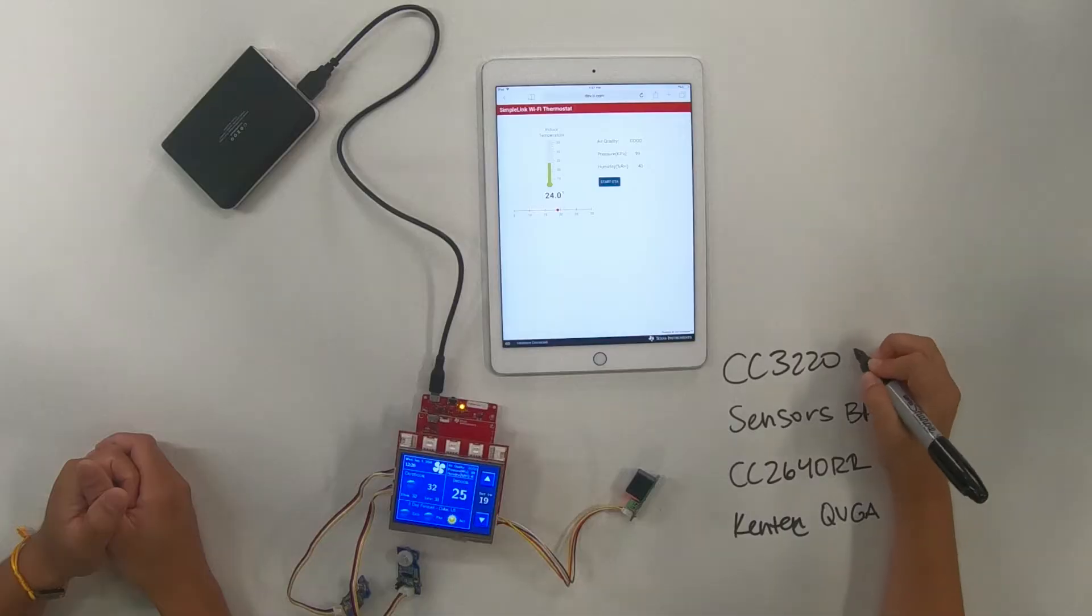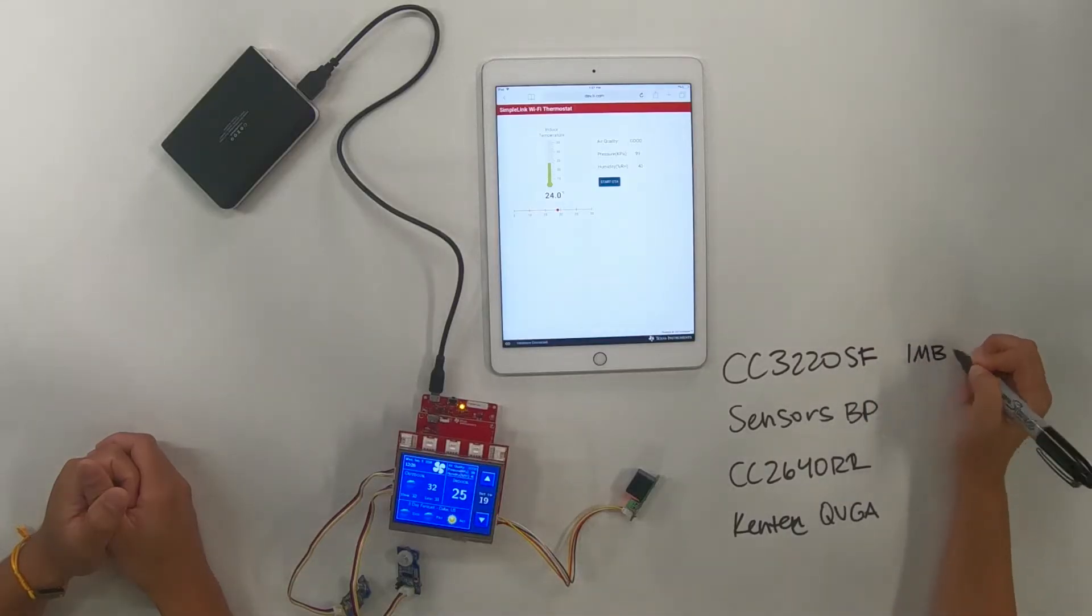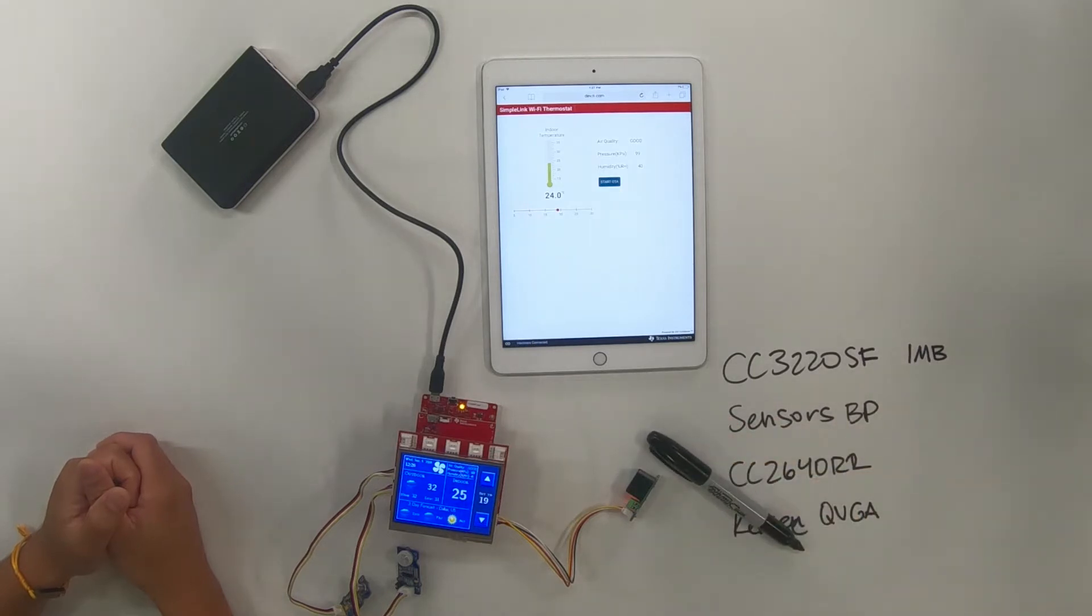And there's a lot going on here. Is there anything in particular that we're taking advantage of to be able to jam-pack all these capabilities into this application? So specifically on this device, we're using the 3220SF, which has a one megabyte integrated executable flash. And this really allows us to do everything at once and do a lot of the processing of the sensors and the data that's getting sent up to the cloud within the application MCU.